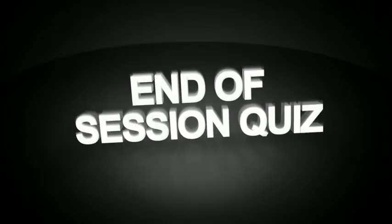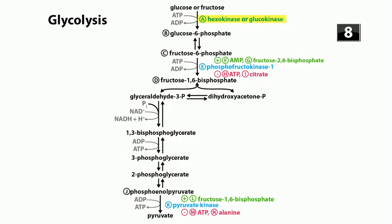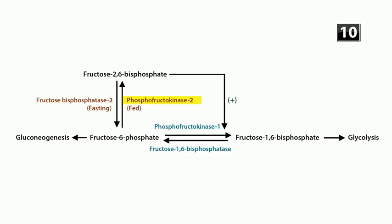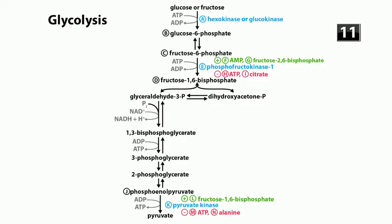End-of-session quiz: What enzymes convert glucose to glucose-6-phosphate? Glucokinase, present in the liver and beta cells of the pancreas, and hexokinase, found everywhere else. What's the clinical consequence of a glycolytic enzyme deficiency? Hemolytic anemia, because red cells can't generate ATP to maintain the sodium-potassium ATPase, leading to red cell swelling and lysis. What enzymes regulate intracellular fructose-2,6-bisphosphate levels? PFK2 increases levels; FBPase2 decreases levels. What's the rate-limiting enzyme in glycolysis? Phosphofructokinase-1.